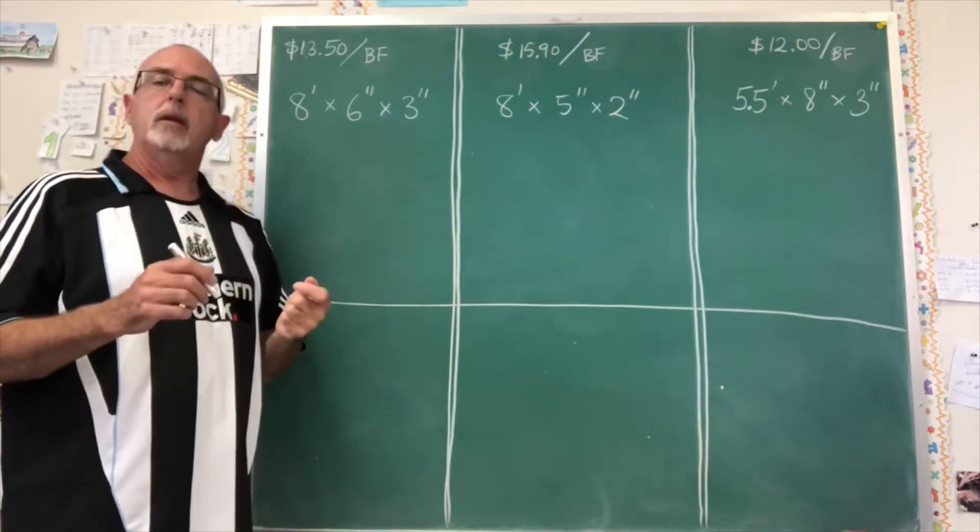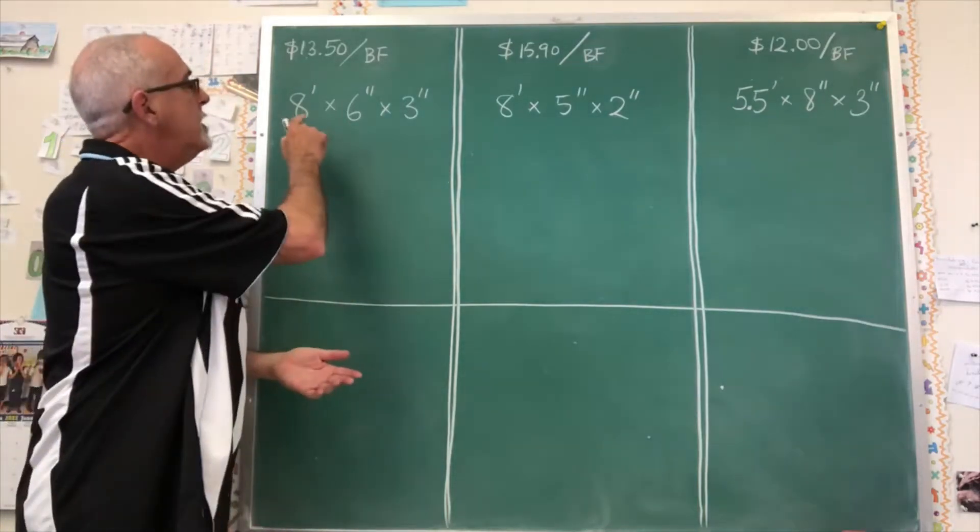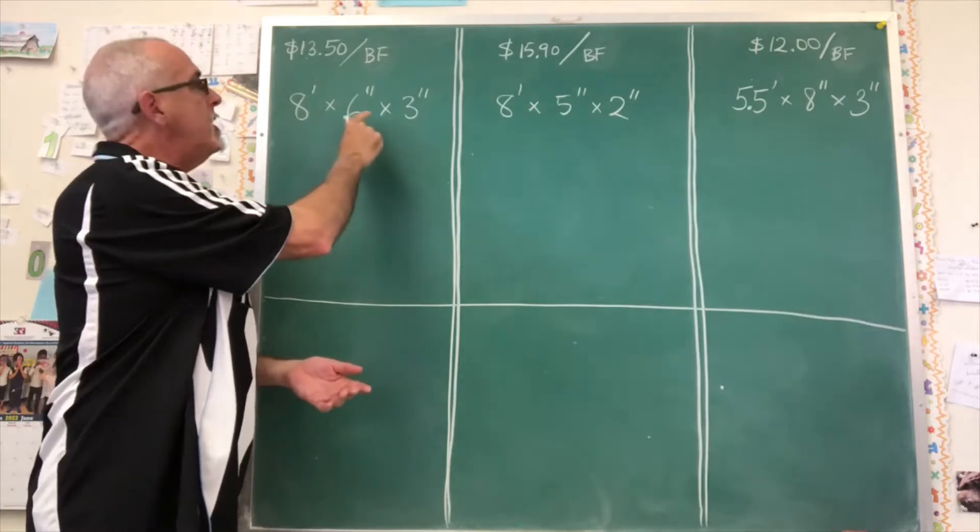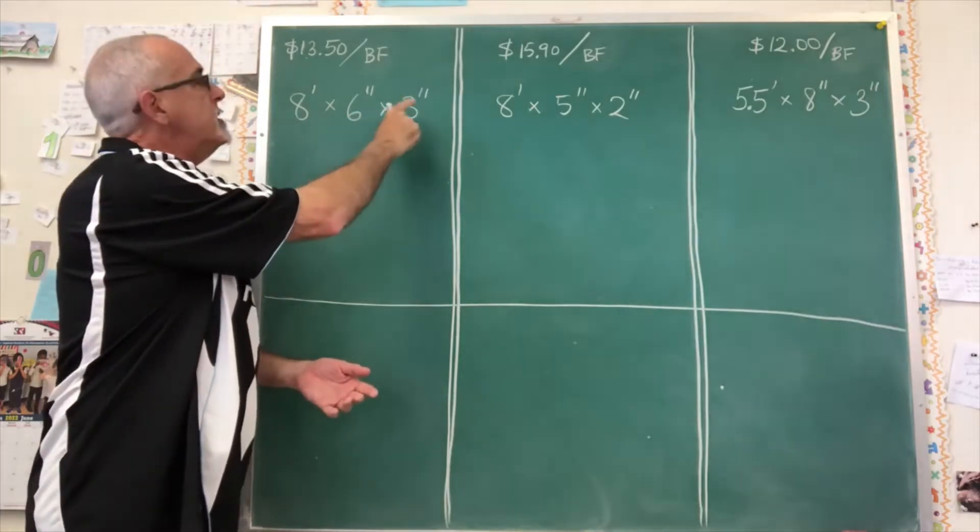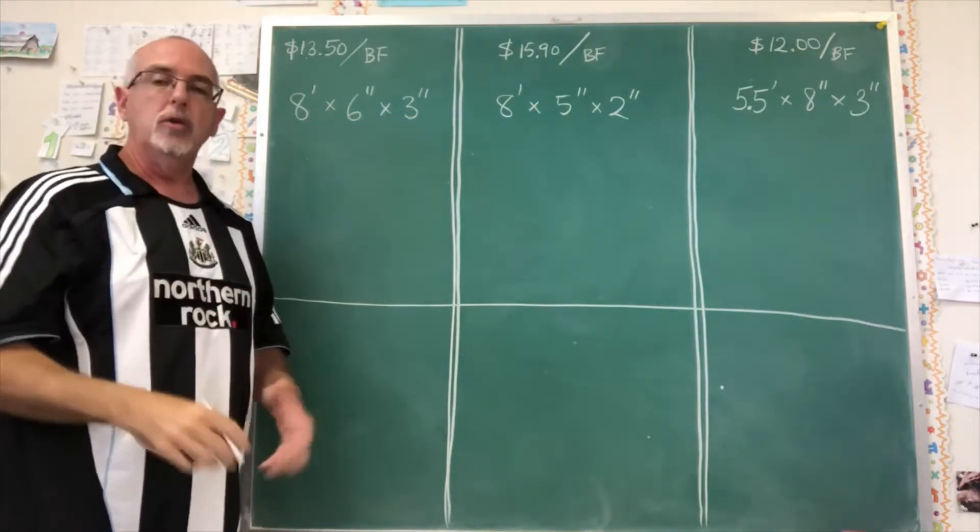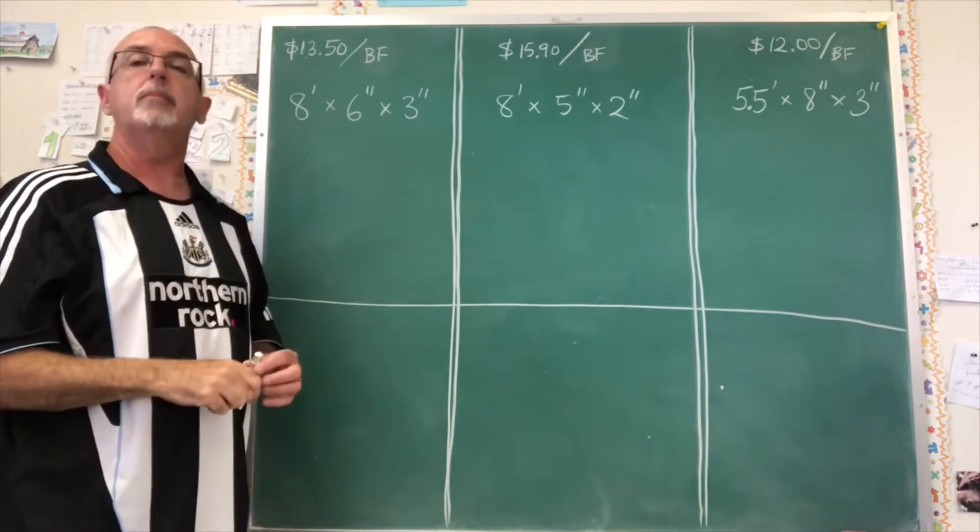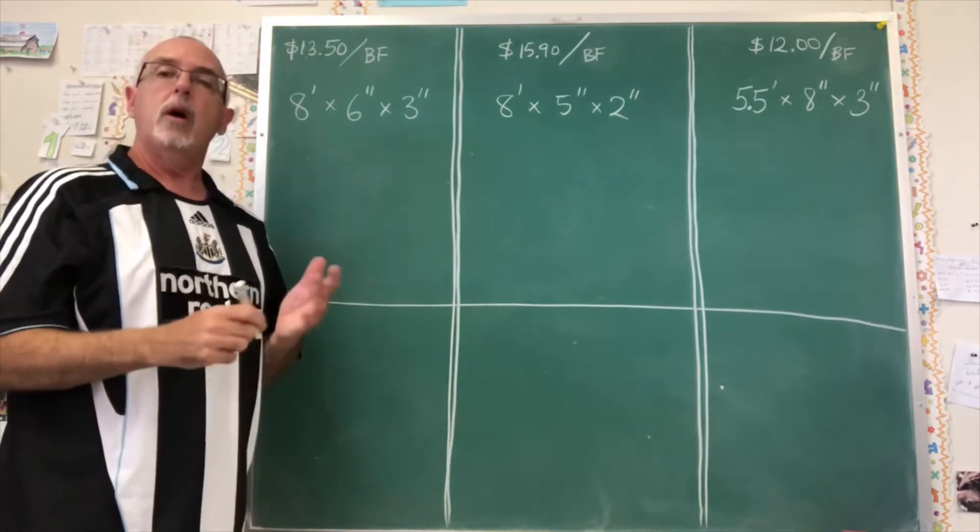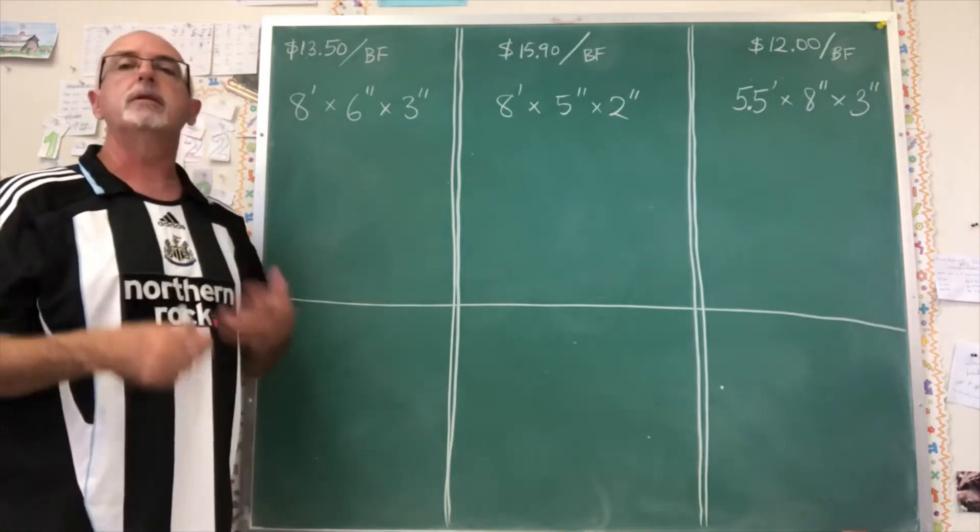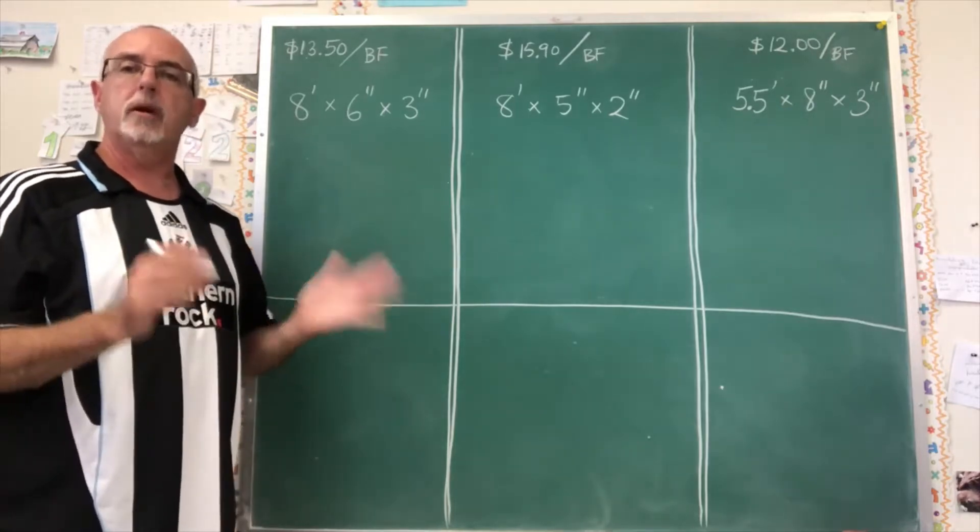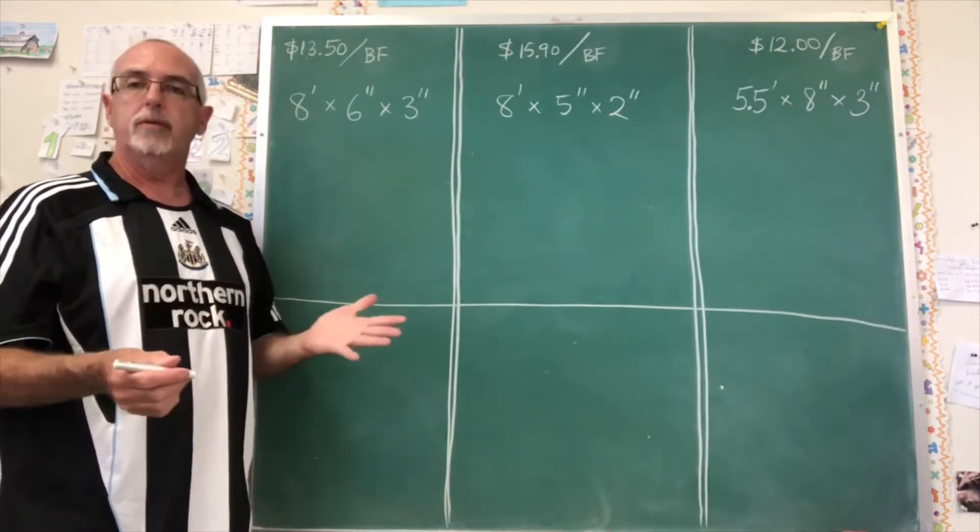So the process is multiply the length in inches by the width in inches by the thickness in inches. You'll get a big number and then you divide that by 144. Why are you dividing by 144? Because 144 is 12 squared, 12 inches by 12 inches, so a square foot.